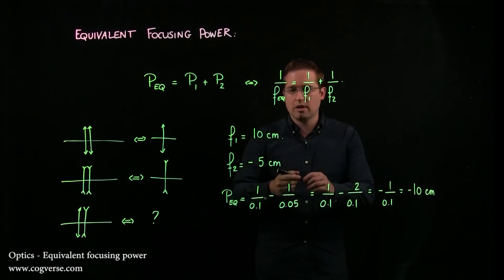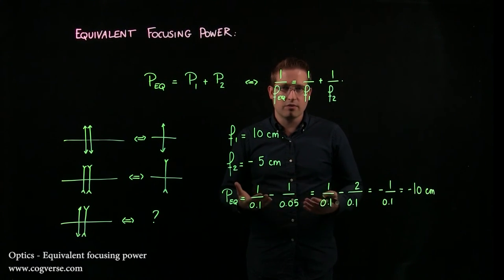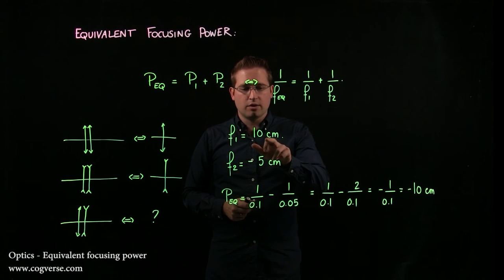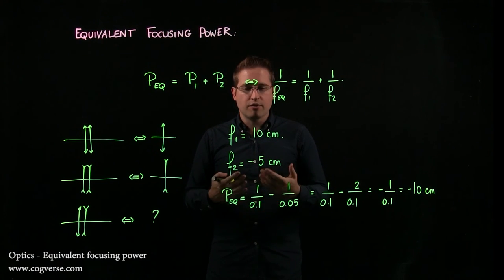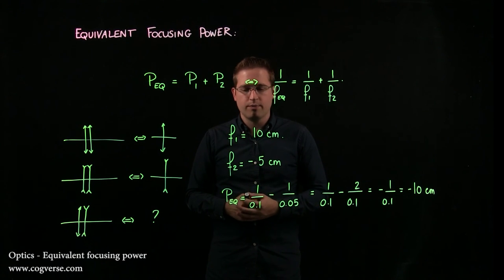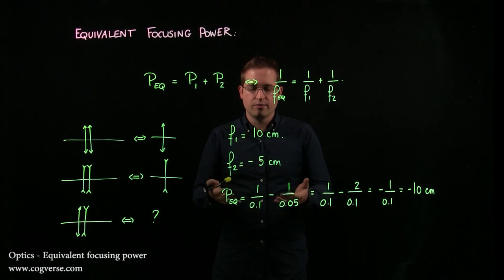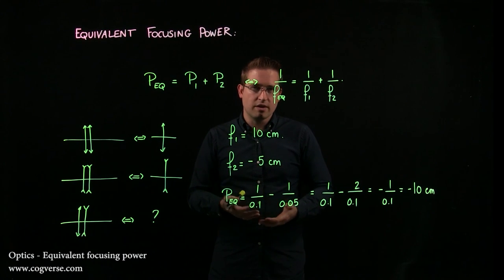And the equivalent lens is a diverging lens. That makes sense because f1 had a greater focal length but therefore a smaller focusing power, and f2 had a greater focusing power and dictated that the equivalent lens should be a diverging lens.